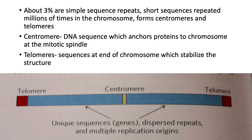About 3% of these are simple sequence repeats. These are short sequences repeated millions of times in the chromosome. They form centromeres and telomeres. Centromeres are the DNA sequence which anchors the protein to the chromosome at the mitotic spindle, and telomeres are sequences at the end of the chromosome which stabilize the structure.